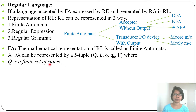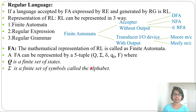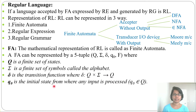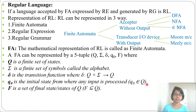Q is the finite set of states. Sigma is the finite set of symbols called the alphabet — we already discussed what alphabet is in the previous lecture. Delta is the transition function where delta of Q and sigma equals Q; with a current state and input symbol, it goes to another state. Q0 is the initial state from where input is processed, and Q0 belongs to Q. F is the set of final states — F can be one state or more than one state, and F is a subset of Q.